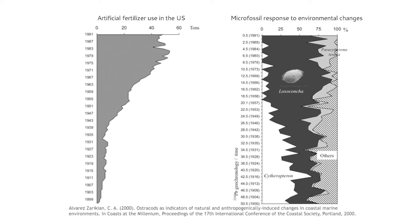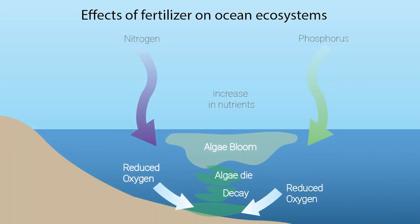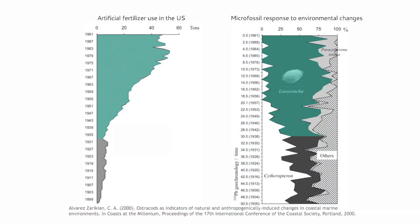Micropaleontological methods can also be applied to monitor changes in modern environments. For example, the increase in fertilizer use in the Mississippi watershed has led to an increase in nutrient delivery to coastal waters. The increase in nutrients causes blooms of algae, which creates more organic matter that organisms in the water column can consume. The leftovers sit on the seafloor and are degraded by microorganisms, reducing the amount of available oxygen, and thus controlling which benthic organisms can live there.